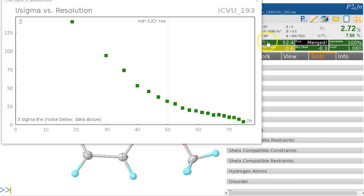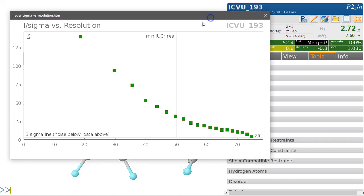If I click on this, I can see the I over Sigma plot, and it's clear that this is very strong data. We have very strong I over Sigma all the way to the ICR limit—we're still looking at 30 to 35 I over Sigma here. It's very strong data.